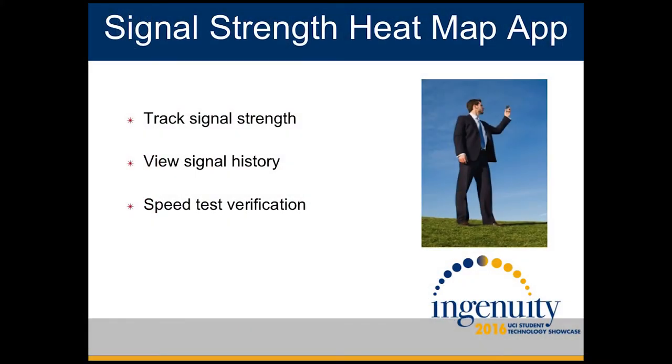You could be a businessman who travels from hotel to hotel, or you could be like me at the grocery store trying to download recipes to figure out what to buy — but you have a poor signal strength and can't download it. Enter the M2 signal strength heat map app.